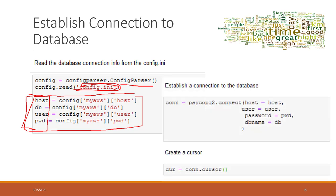Next, we are going to use a Python library that is compatible with PostgreSQL to establish a connection to the database, where we will pass the host information, user information, password, and also database name, etc.